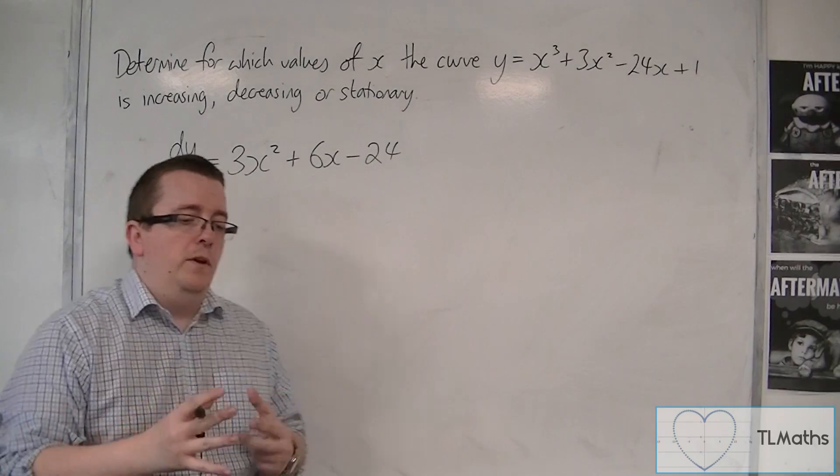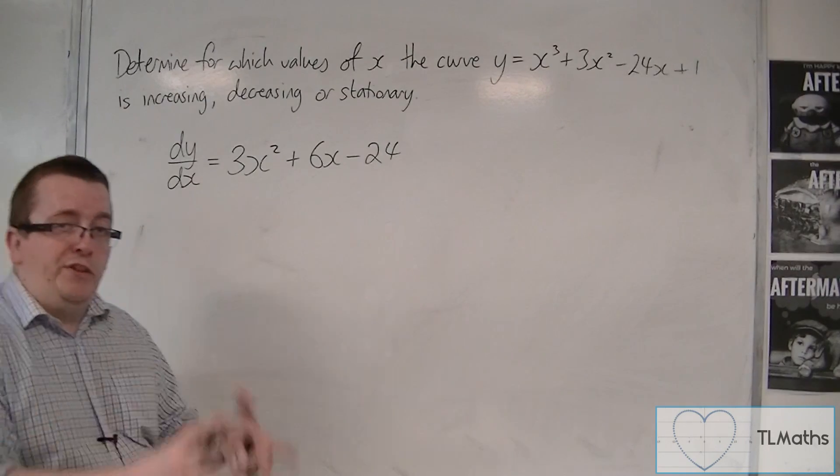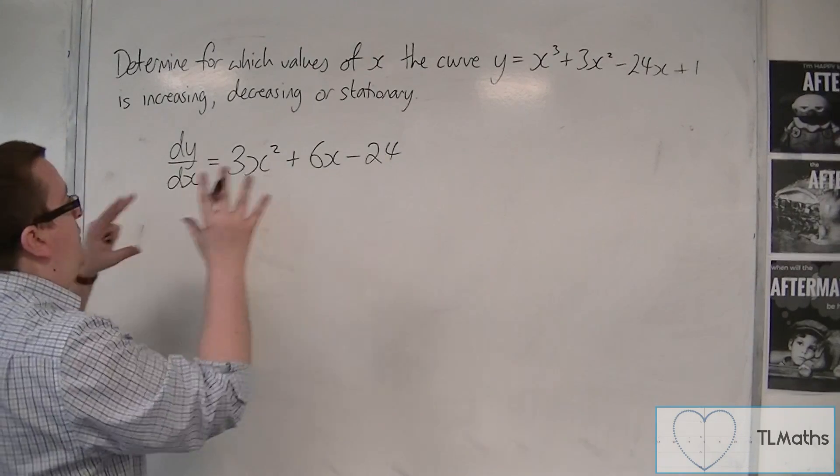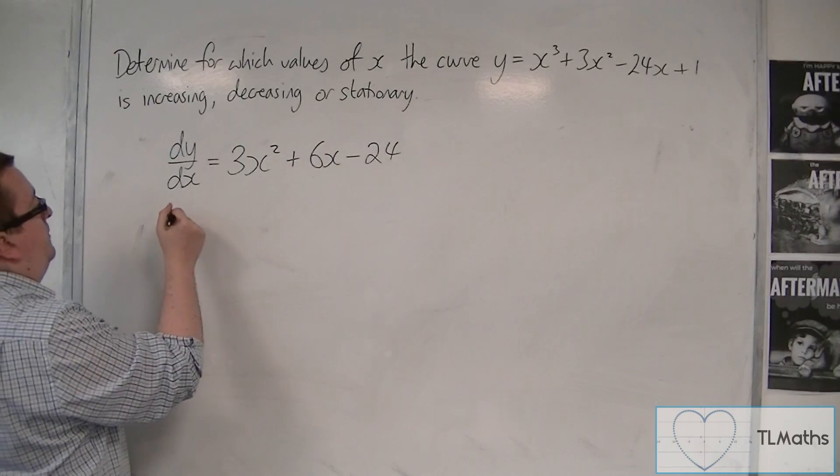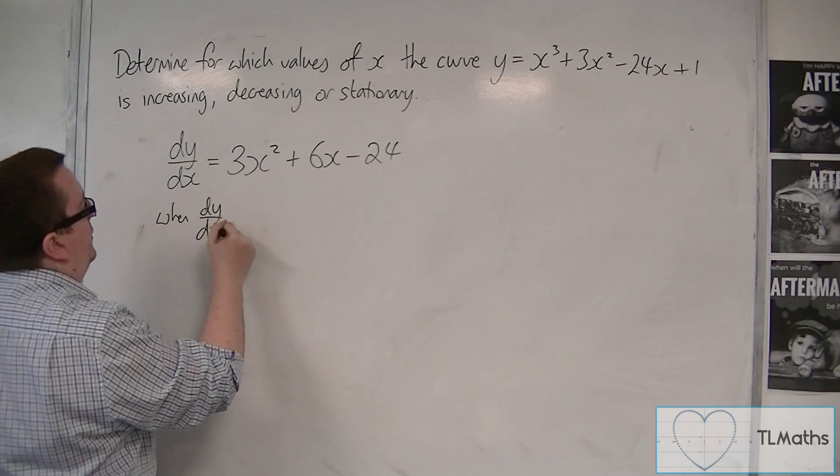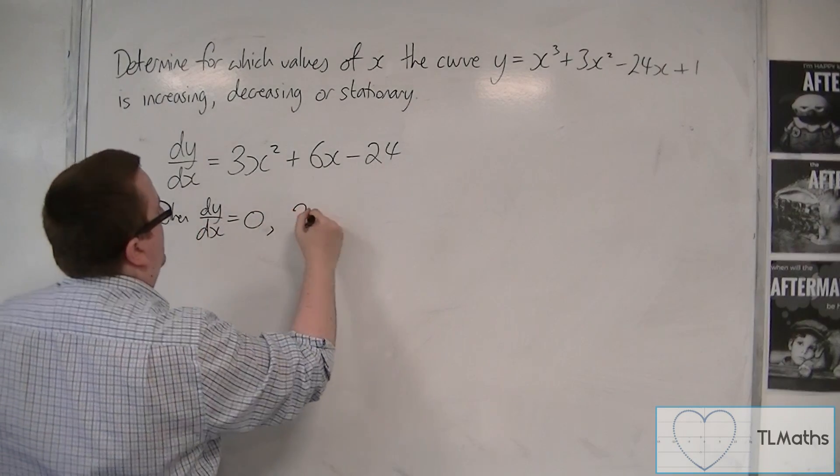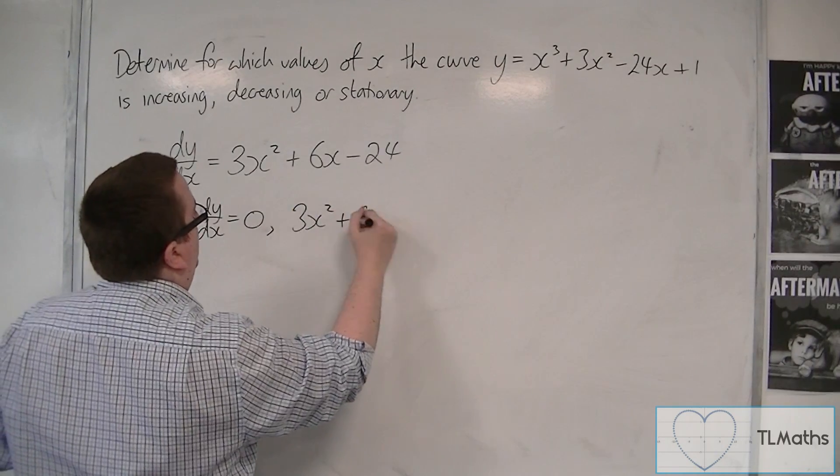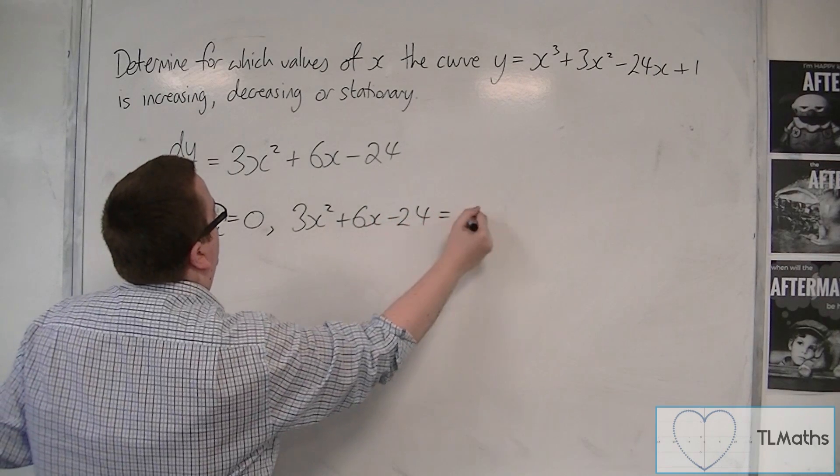And at this point, what we look at are the stationary points. So we find the stationary points first. When dy by dx equals zero, that means we have 3x squared plus 6x minus 24 is zero.